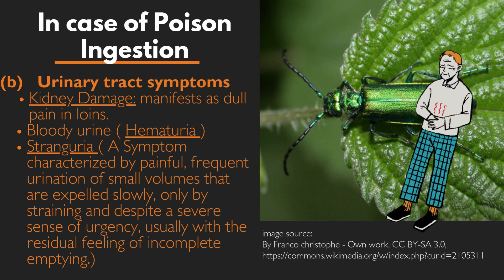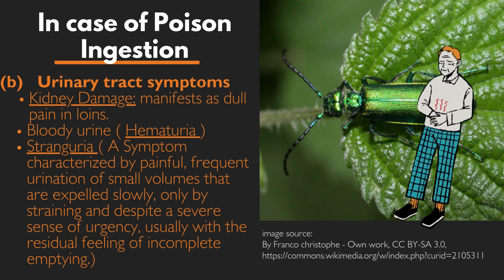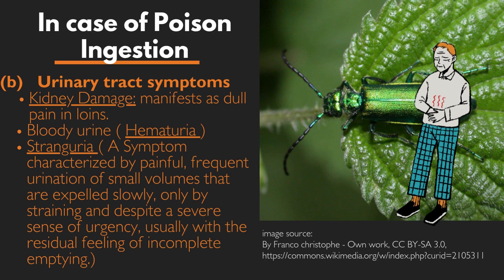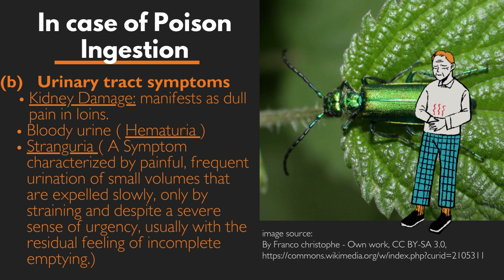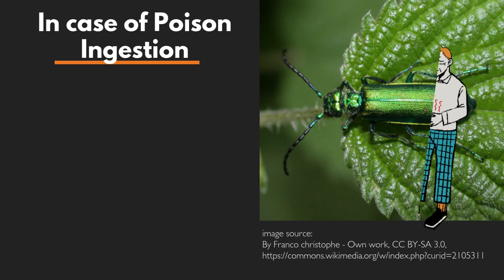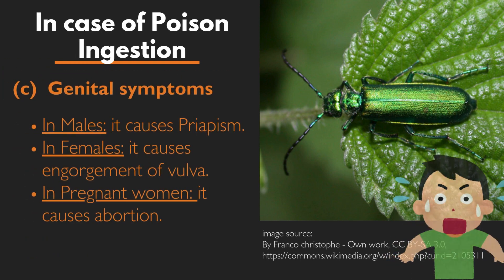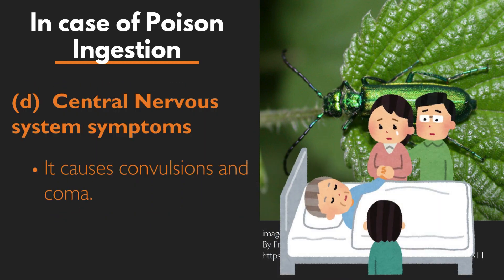Stranguria is also seen — a symptom characterized by painful, frequent urination of small volumes expelled slowly only by straining, despite a severe sense of urgency, usually with a residual feeling of incomplete emptying. Genital symptoms: in males it causes priapism; in females it causes engorgement of the vulva; in pregnant women it causes abortion. Central nervous system symptoms include convulsions and coma.